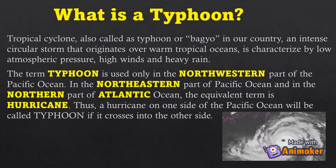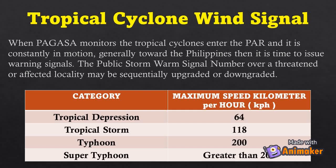Tropical cyclone wind signals: when PAGASA monitors tropical cyclones entering the Philippine Area of Responsibility and a cyclone is constantly moving generally toward the Philippines, it is time to issue warning signals. The public storm warning signals may be sequentially upgraded or downgraded. Classifications by wind speed: Tropical Depression — 64 km/h; Tropical Storm — 118 km/h; Typhoon — 200 km/h; Super Typhoon — greater than 200 km/h.